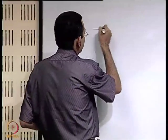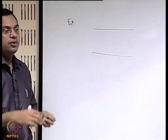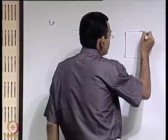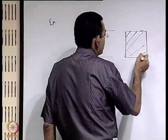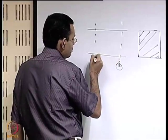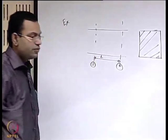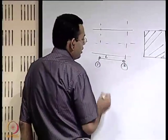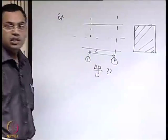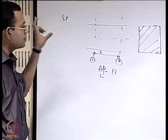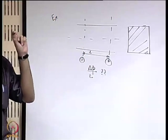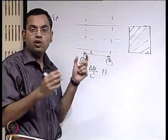Let us say that you have a duct — this duct may be of a square shape or whatever shape. We are focusing our attention on two sections 1 and 2, located relative to each other by a distance L along the axial direction, and our interest is to find out the average pressure gradient acting over this length. This is actually a very practical situation if you want to assess the flow past different bodies in something called a wind tunnel.